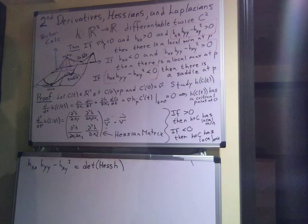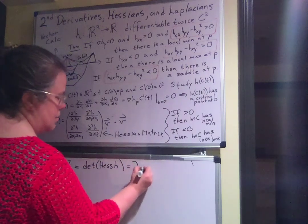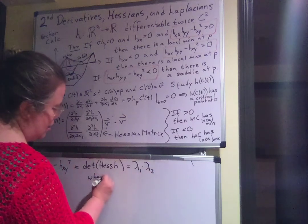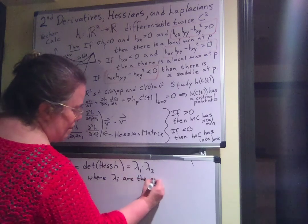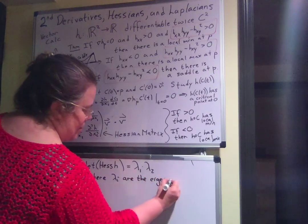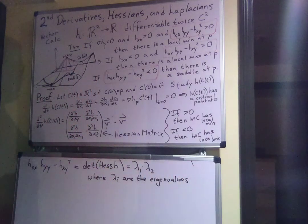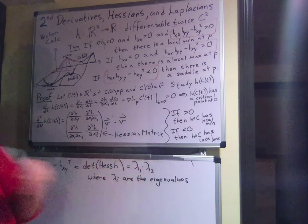Now what is the determinant? Well, the determinant is the product of the eigenvalues. So this equals lambda 1 times lambda 2, where lambda i are the eigenvalues of this matrix, Hessian H. There's only two eigenvalues because it's only a two by two matrix.